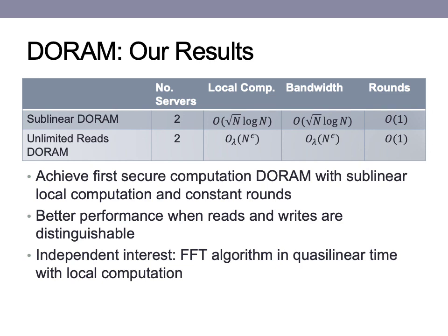To wrap up, we are able to obtain two constructions: the first is the first secure computation DO-RAM with sublinear local computation and constant rounds. The second is an unlimited reads DO-RAM that leverages doubly efficient PIR, leaking the difference between reads and writes to obtain better asymptotic performance, achieving n to the epsilon for any epsilon greater than zero local computation and bandwidth. We also present an FFT algorithm that in quasi-linear time with only local computation is able to do multivariate interpolation and evaluation, and we believe may be a primitive of independent interest. Thank you for listening — please feel free to reach out if you have any questions; our emails can be found on our paper.